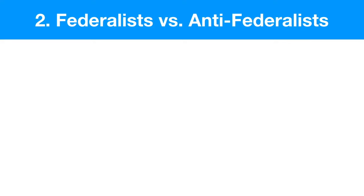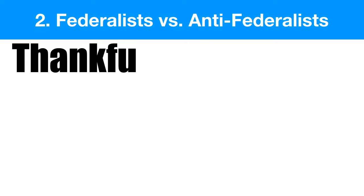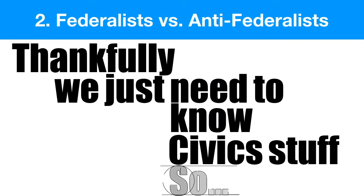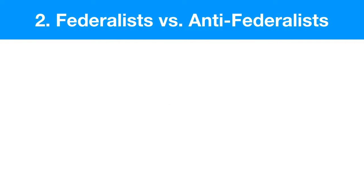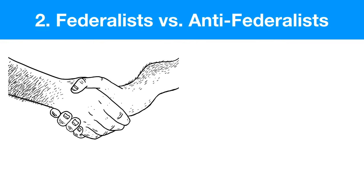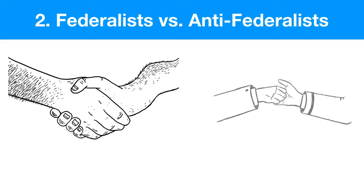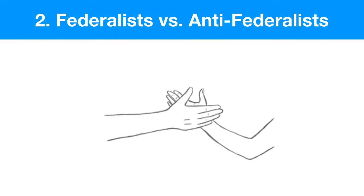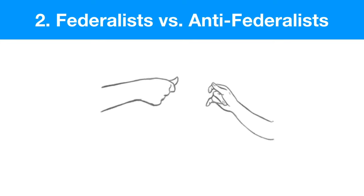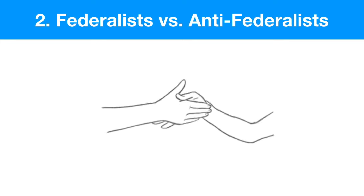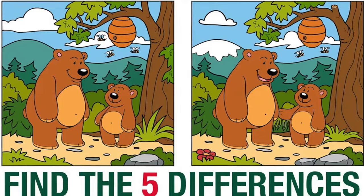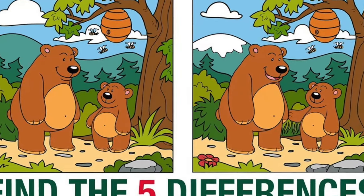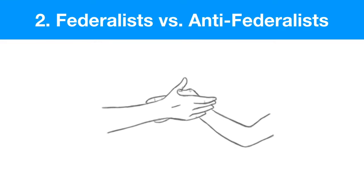Now, there are a lot of things that happen at this convention that most history classes go over. But for civics, we just need to know the civics stuff. This video is not going to cover things that aren't on your civics state exam — like who specifically was a Federalist or Anti-Federalist, what compromises were made, or the arguments they had. The state civics exam is going to ask you the difference between Federalists and Anti-Federalists and how they felt about the Constitution. So that's what we're going to cover.